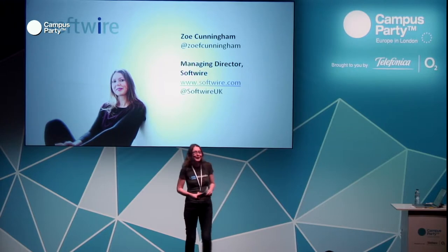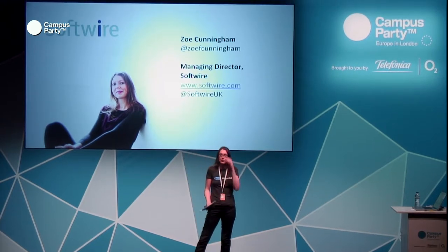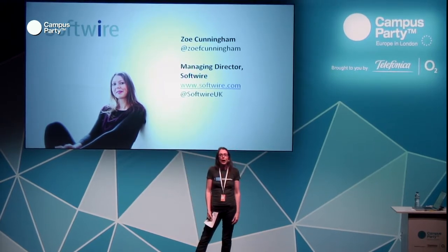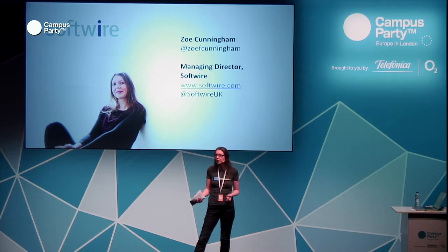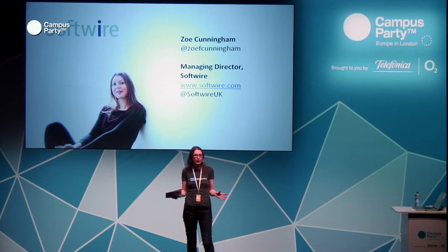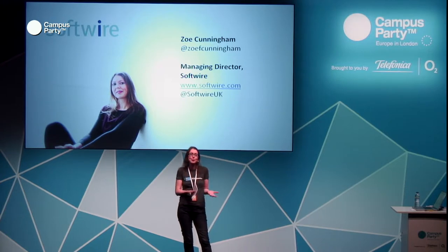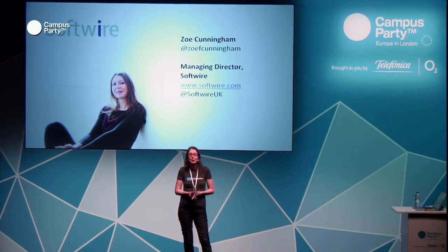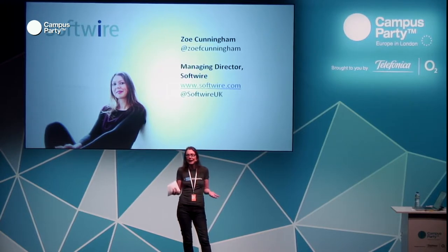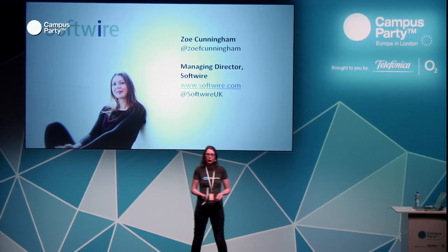So what we do at Softwire is we make bespoke systems for businesses — anything that you can't buy off the shelf, we can build for you. We work across all different technologies and all different industries. We make a lot of systems for the BBC — we made their system that they used for the Glastonbury footage, which was really well received. We also build pricing engines for insurance companies, banking software, and so on.